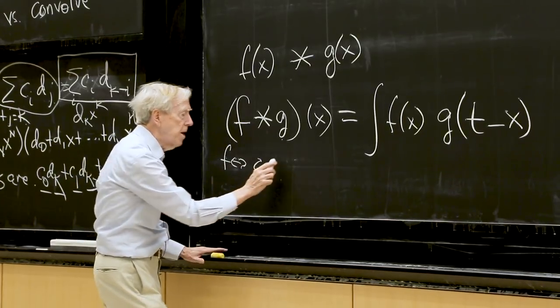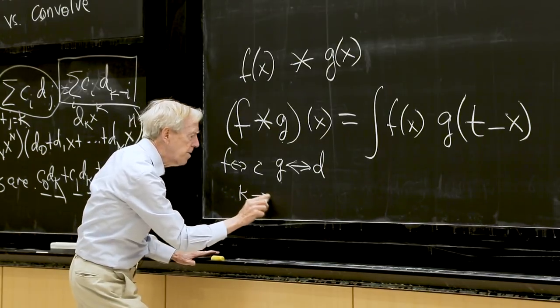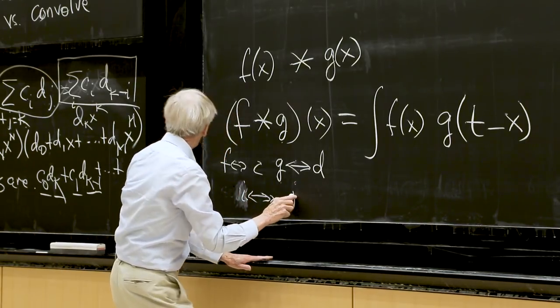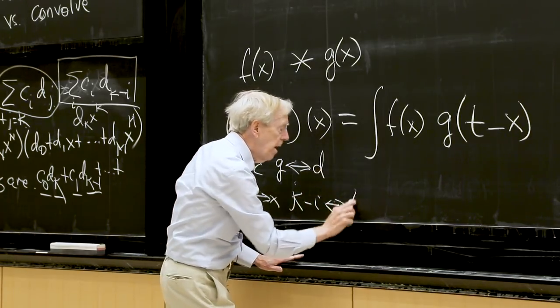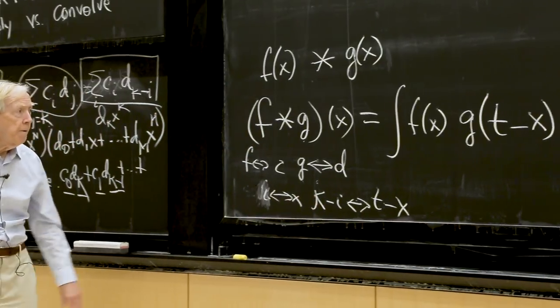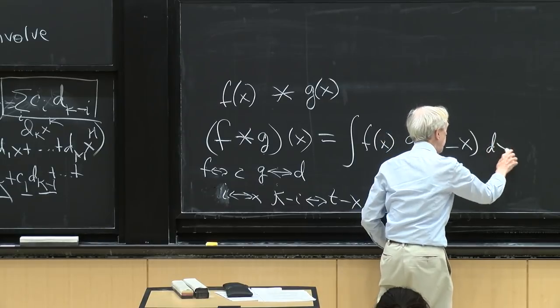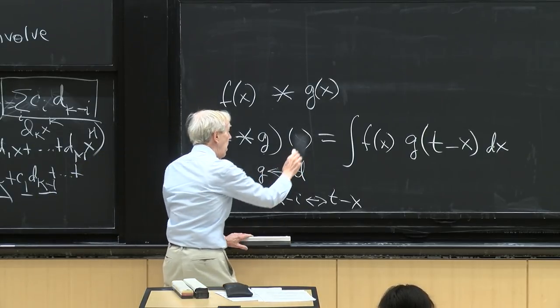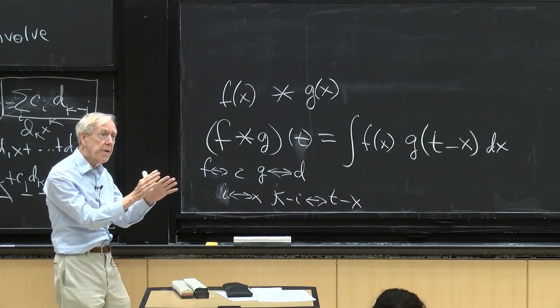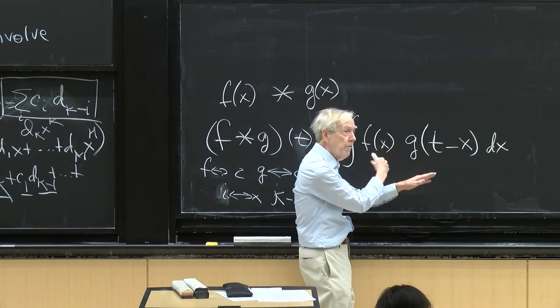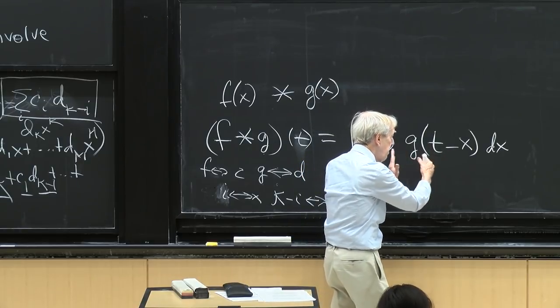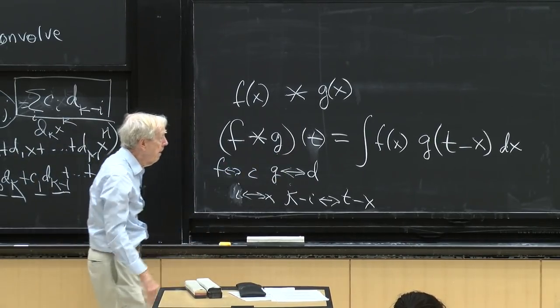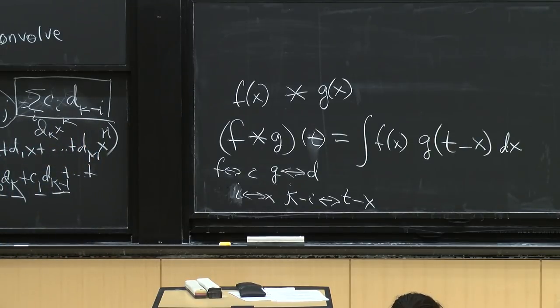So k corresponds to t. This would be the convolution of two functions. Oh, it's a function of t. Bad notation. The t is sort of the amount of shift. You see, I've shifted g. I've reversed it and I've flipped it. And shifting it by different amounts t. It's what you have in a filter. It's just always present in signal processing. So that would be a definition.